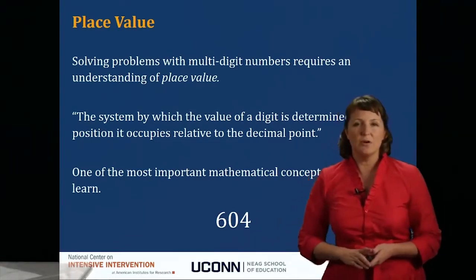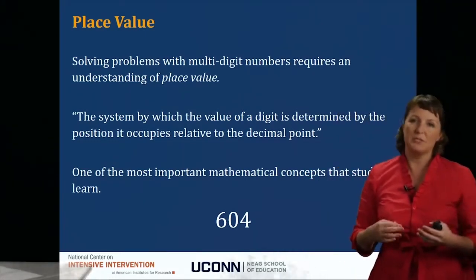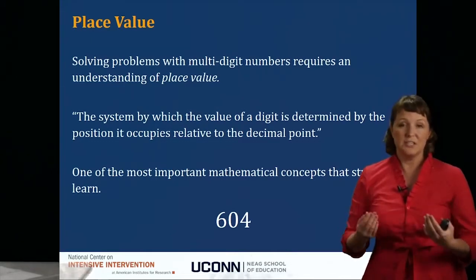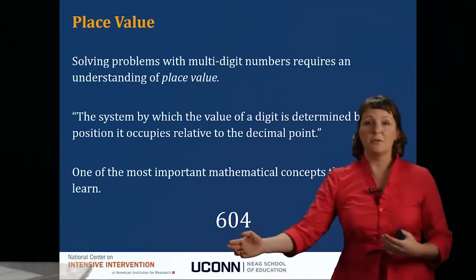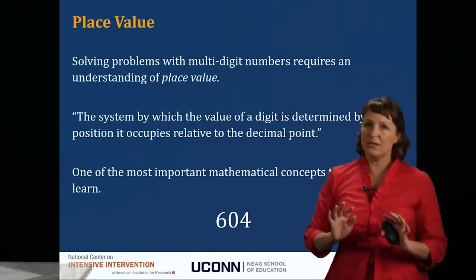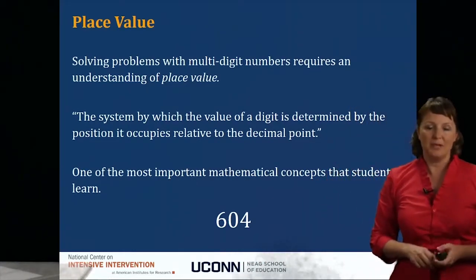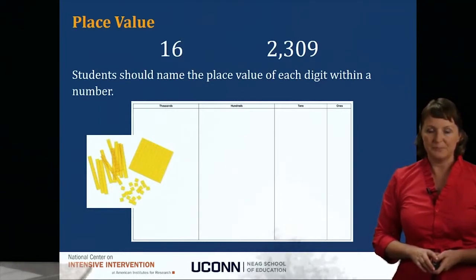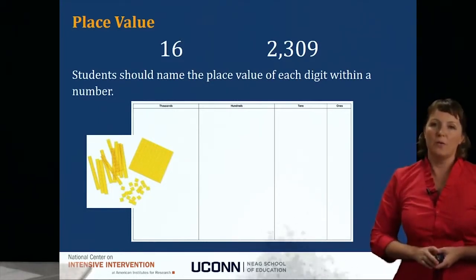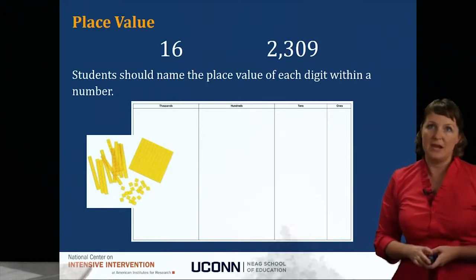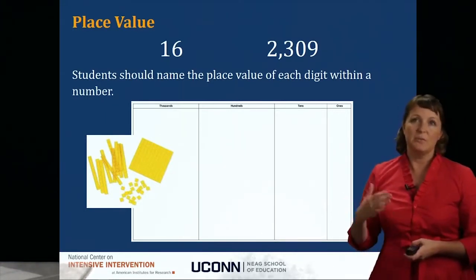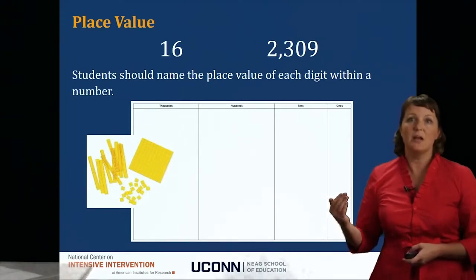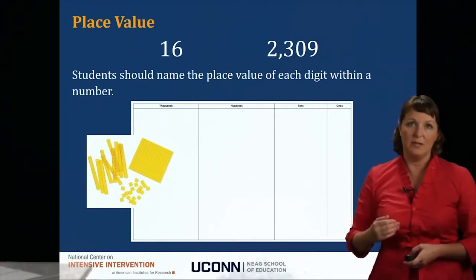A lot of students have difficulty with place value because they've been exposed very often to single digit numbers, and then we start throwing in double digit and triple digit numbers pretty quickly without providing a lot of place value background. Students should be able to name the place value of each digit — thousands, hundreds, tens, and ones — for numbers like 16 and 2309.